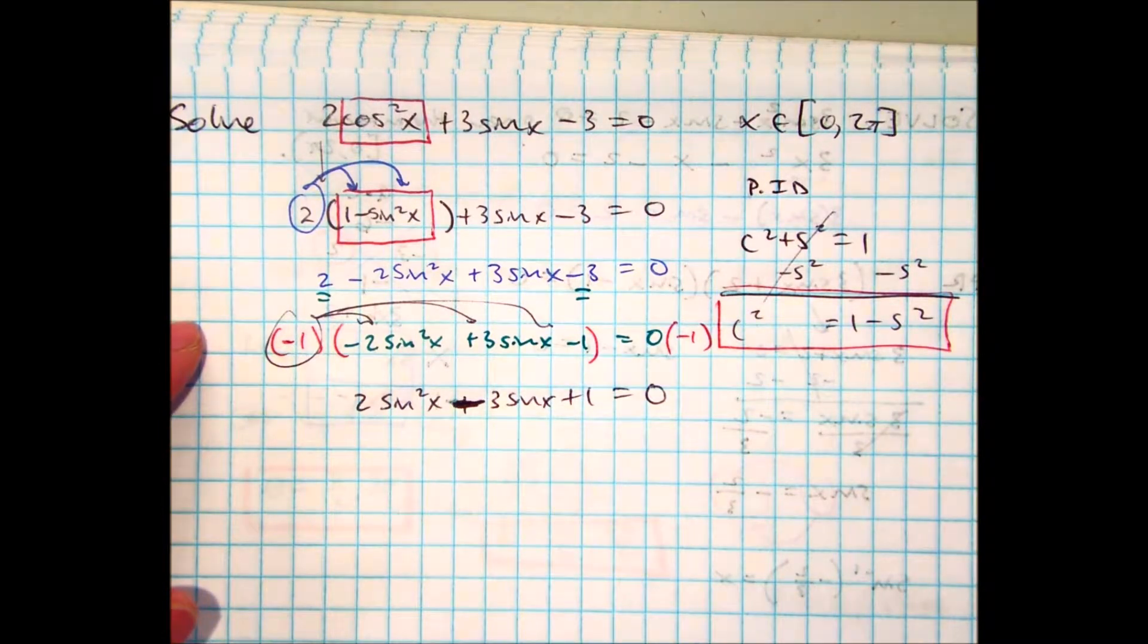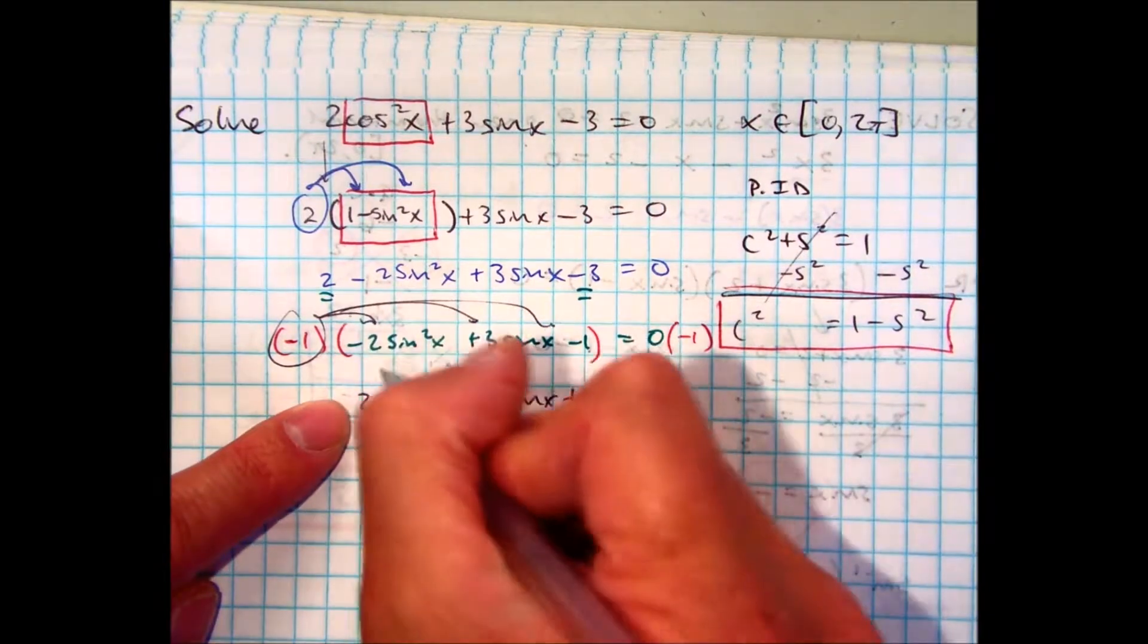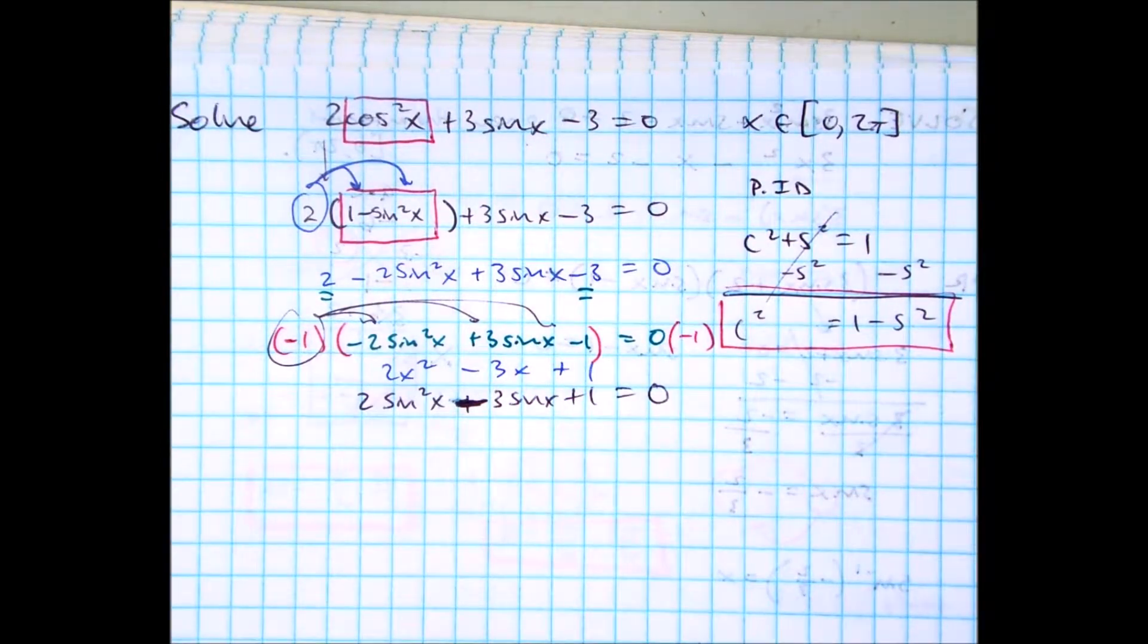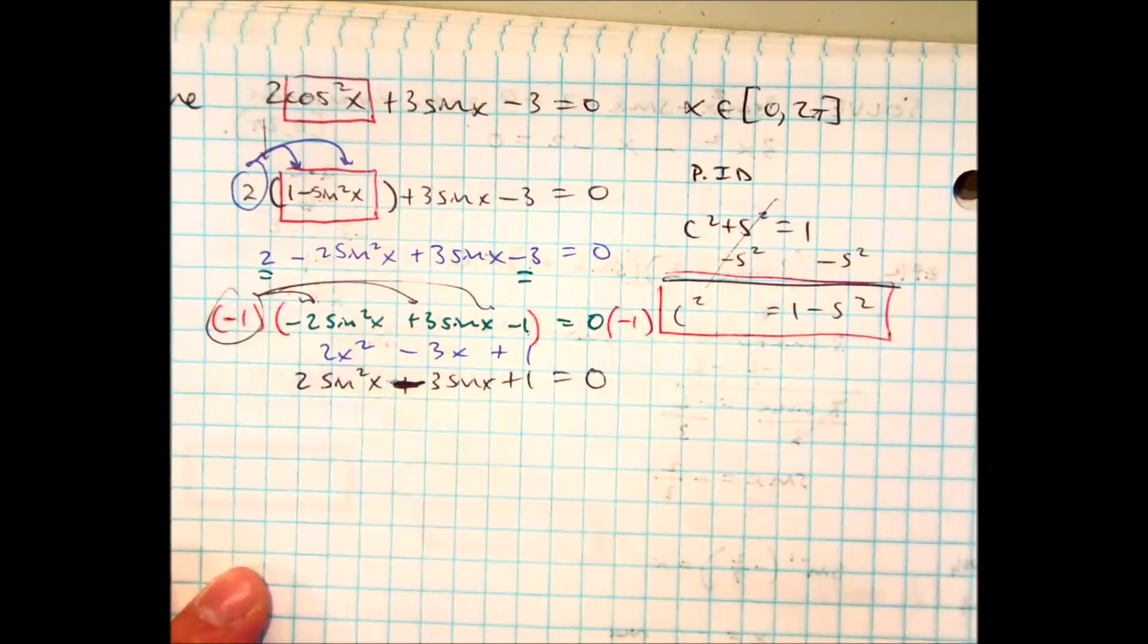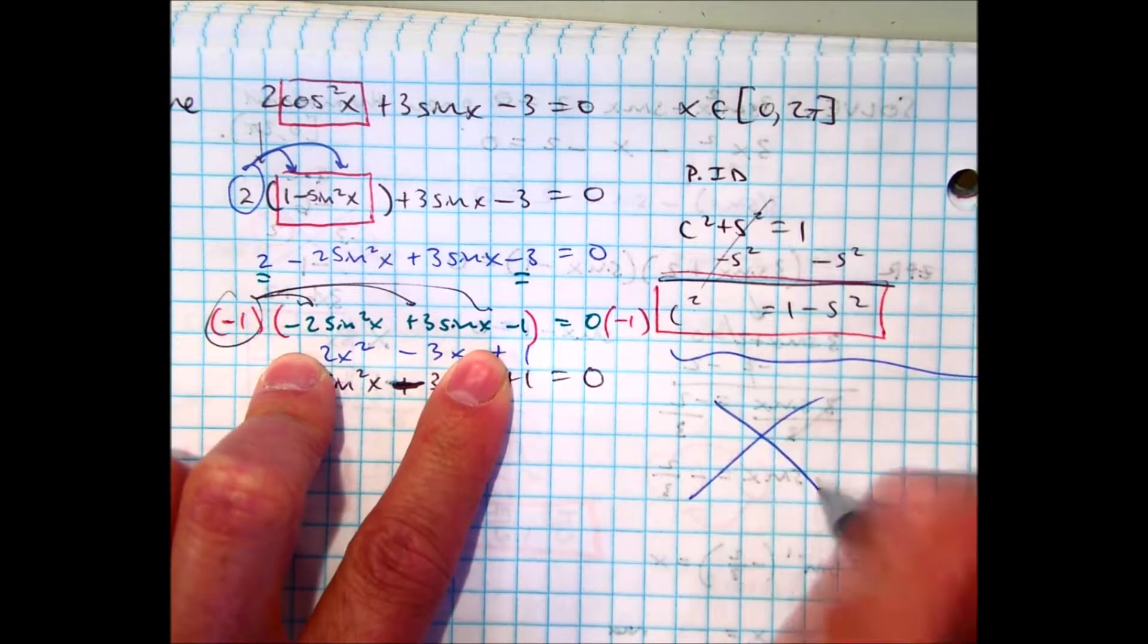Remember, this week we've been practicing solving these problems as if they were the variable x. 2 x squared minus 3 x plus 1. So, we just need to factor that.